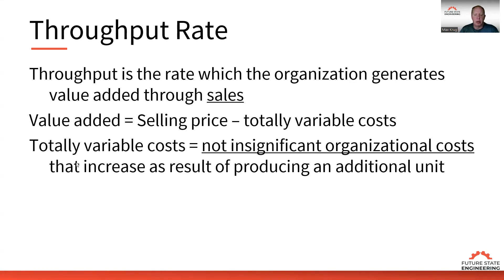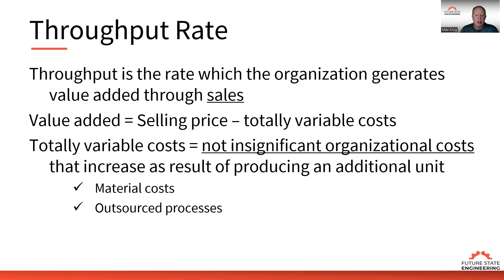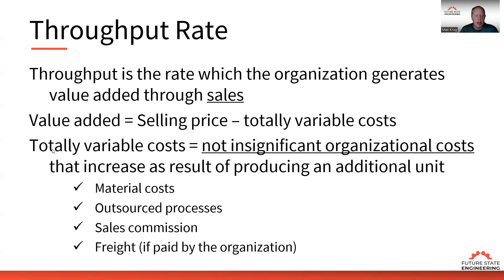Those totally variable costs are not insignificant organizational costs that increase as a result of producing an additional unit. Typically what I see is: material cost, outsourced process if you outsource work to an outside vendor, sales commission paid to the sales team, and freight paid by the organization. Those are the four things I see as totally variable costs. We take the selling price, minus those costs, and that's our value added.